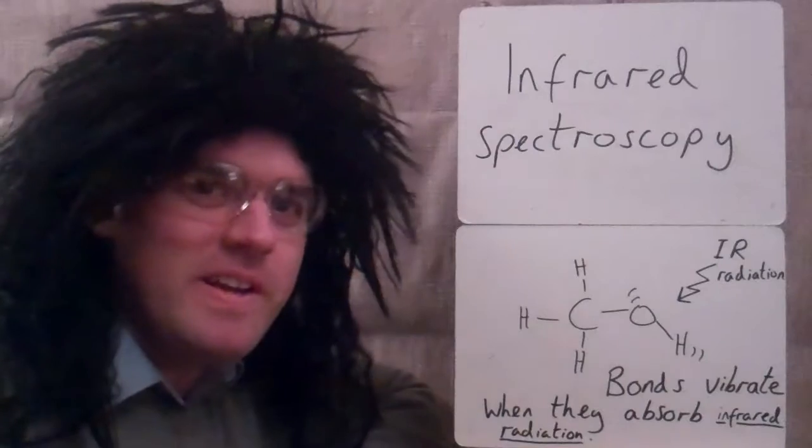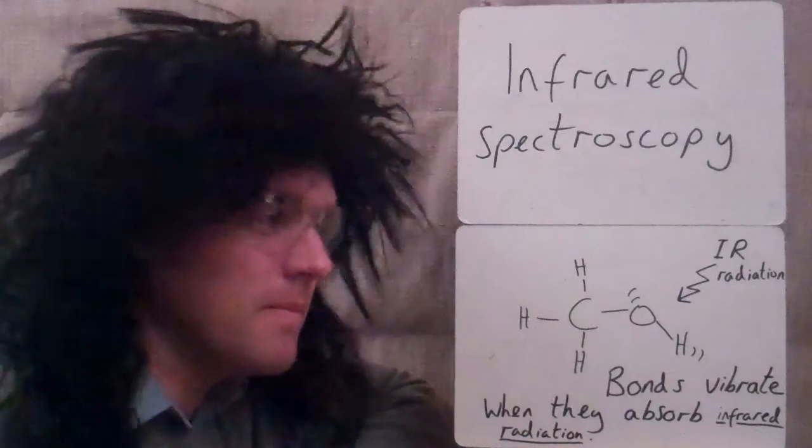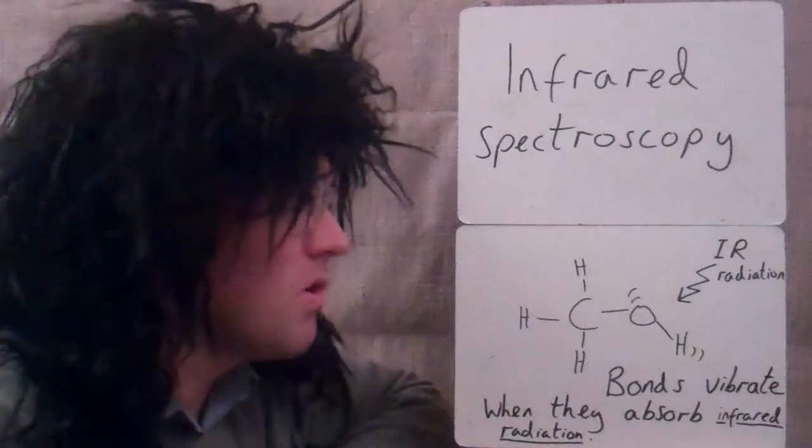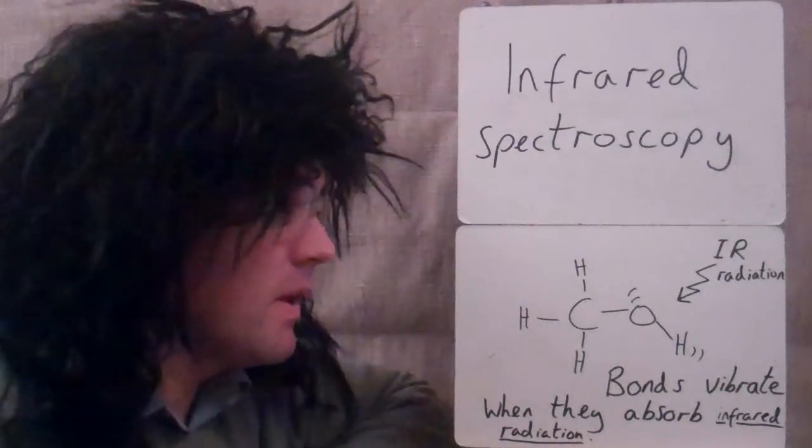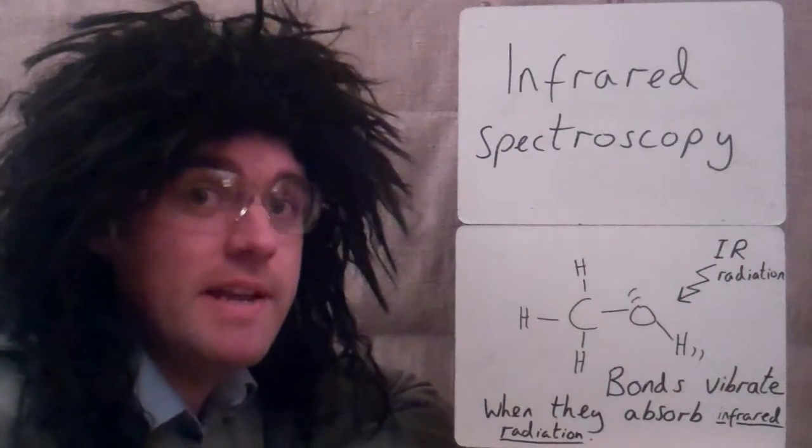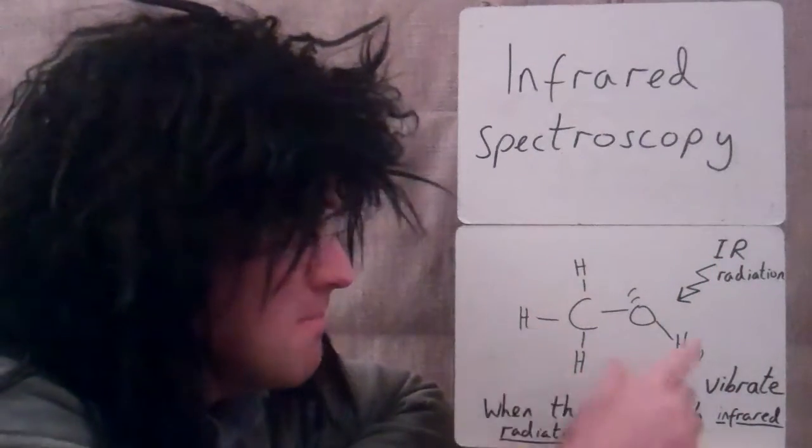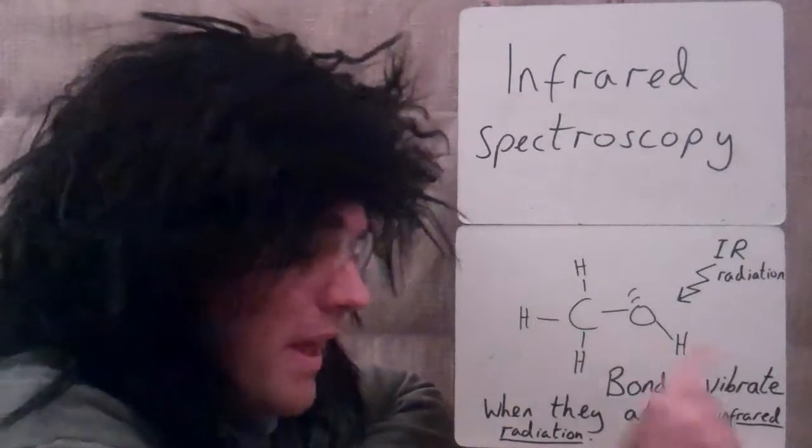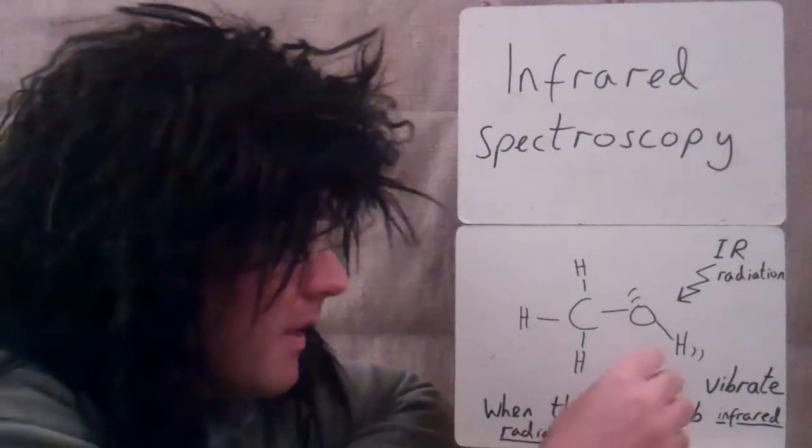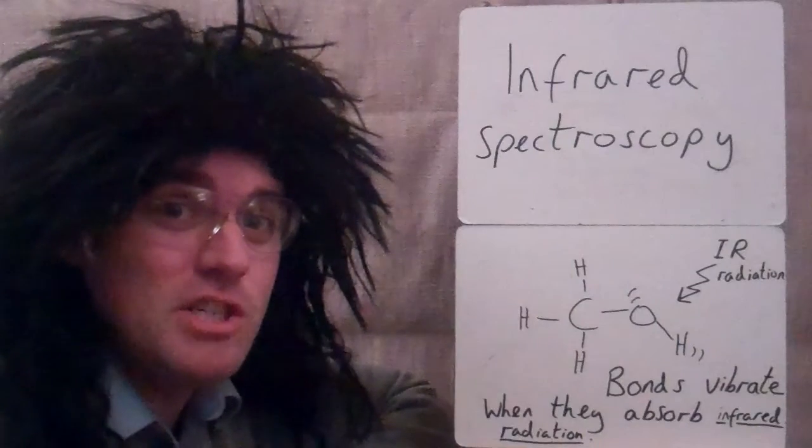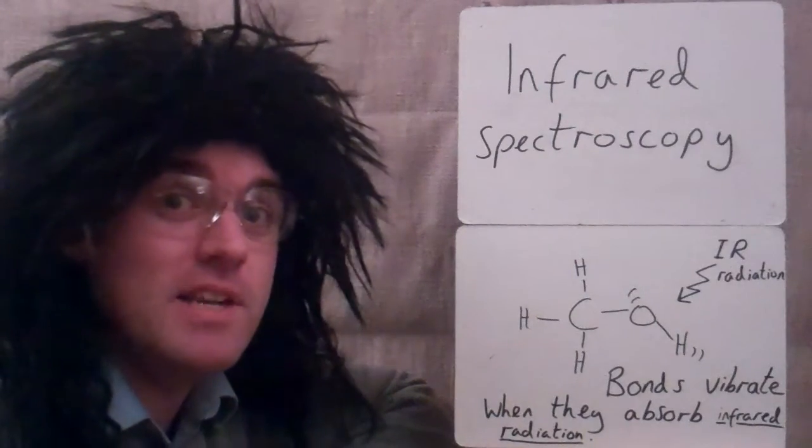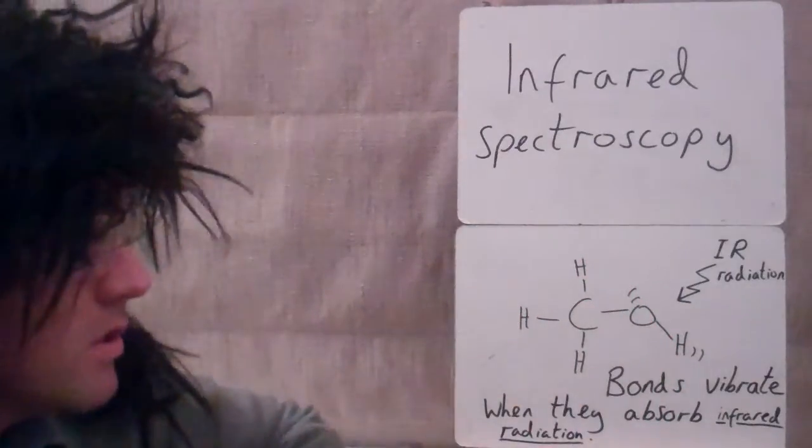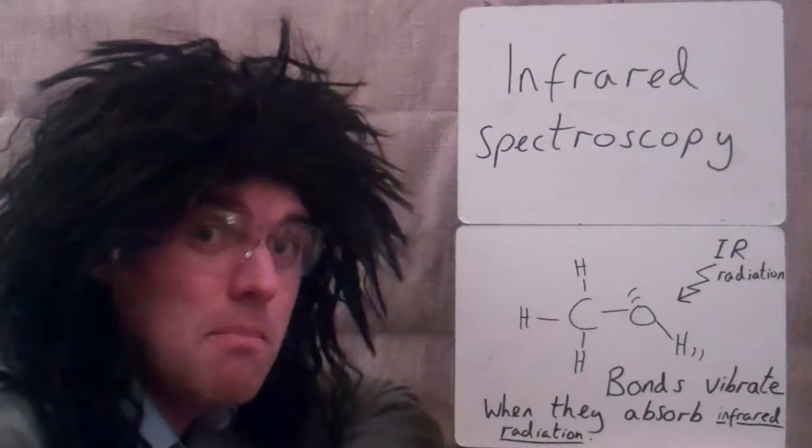Today we're going to look at infrared spectroscopy, a technique used to analyze organic compounds. How does it work? First, we have infrared radiation. When that hits a molecule, the bonds inside the molecule start to vibrate. They vibrate because they've gained energy from the radiation. They've absorbed the infrared radiation, which makes them excited and start to vibrate. By looking at this we can analyze the molecule.